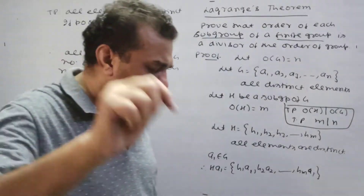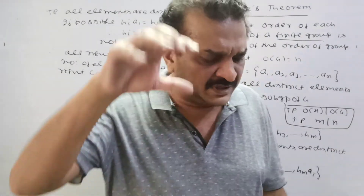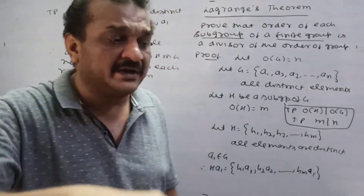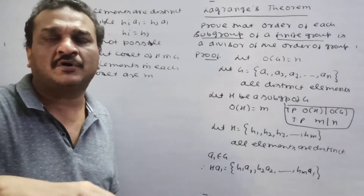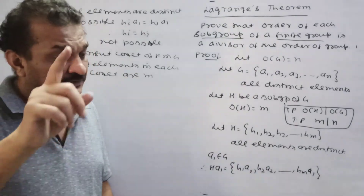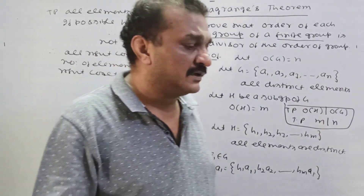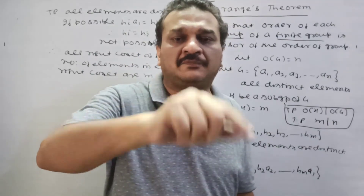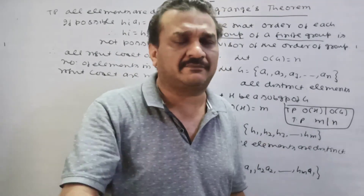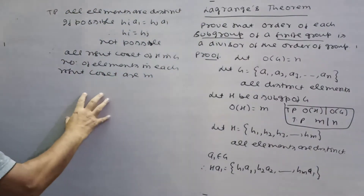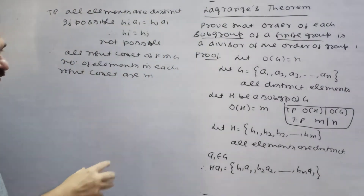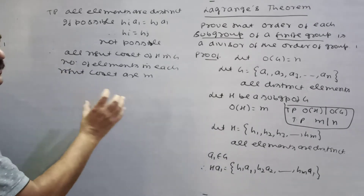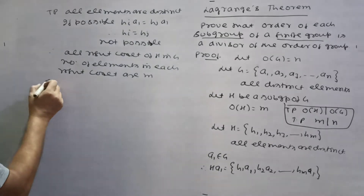We have previously proved two properties: first, any two right cosets are either identical or disjoint; second, G is equal to the union of all distinct right cosets or left cosets.